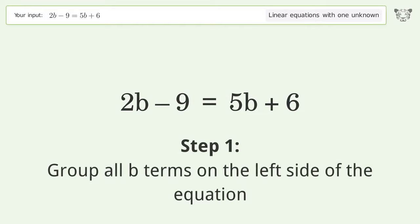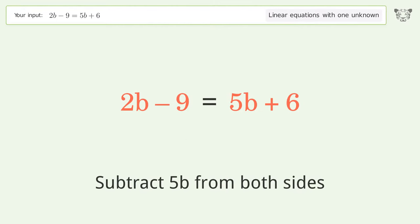Group all b terms on the left side of the equation. Subtract 5b from both sides.